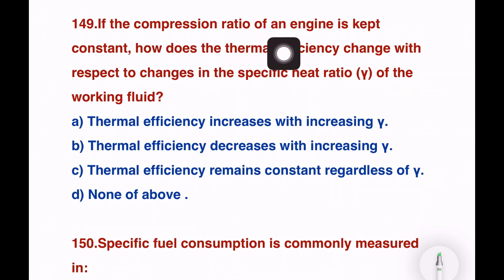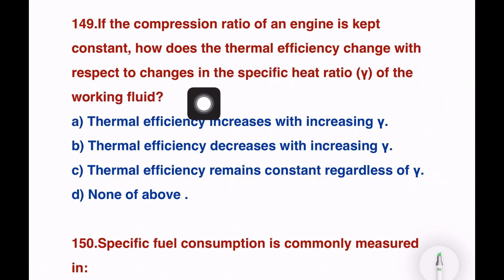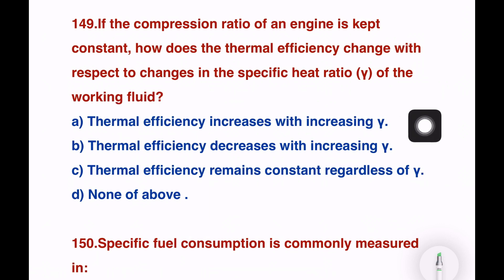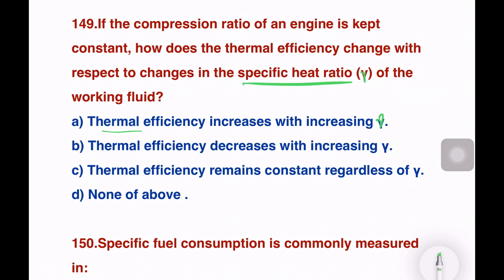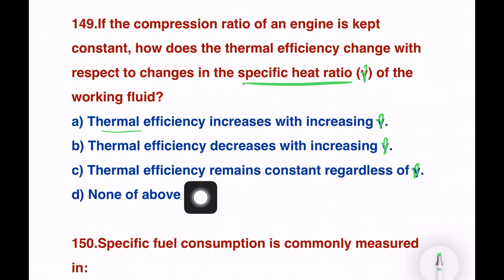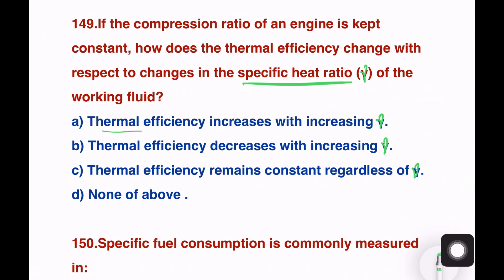Next question. If the compression ratio of an engine is kept constant, how does the thermal efficiency change with respect to change in the specific heat ratio (gamma) of the working fluid? Options: thermal efficiency increases with increases of specific heat ratio; decreases with increases of gamma; remains constant regardless of gamma. Here, R is the compression ratio and gamma is the specific heat ratio.